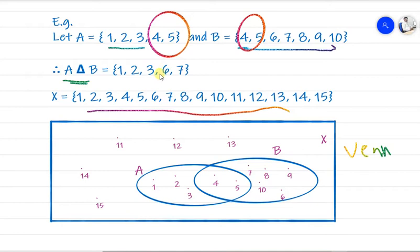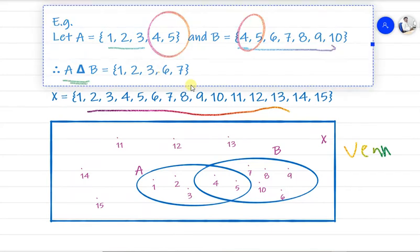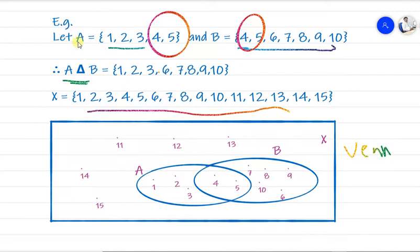Let me correct the result here. From set A we take 1, 2, 3 — skipping 4 and 5 since they are common — and from set B we take 6, 7, 8, 9, 10. So the correct symmetric difference of A and B is {1, 2, 3, 6, 7, 8, 9, 10}, excluding the common elements 4 and 5.